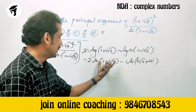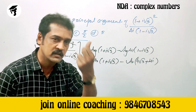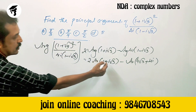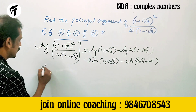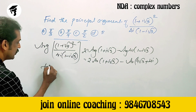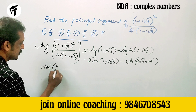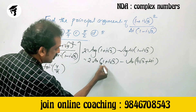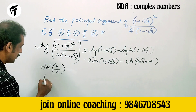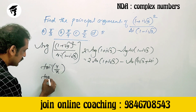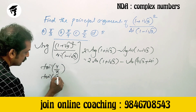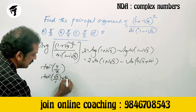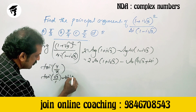The argument is computed using the formula tan inverse of y by x. For (1 + i√3), that is tan inverse of √3 by 1, which gives tan inverse √3.